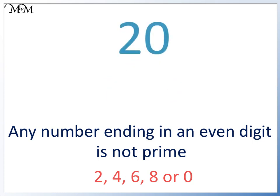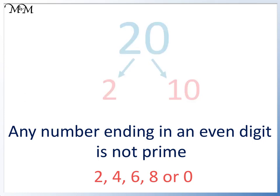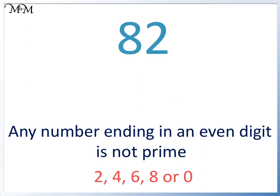Looking at larger numbers: 20 ends in 0, it is 2 times 10, not prime. Even 82 ends in a 2 and so it is in the 2 times table. 82 is 2 times 41, so we only need to check odd numbers.